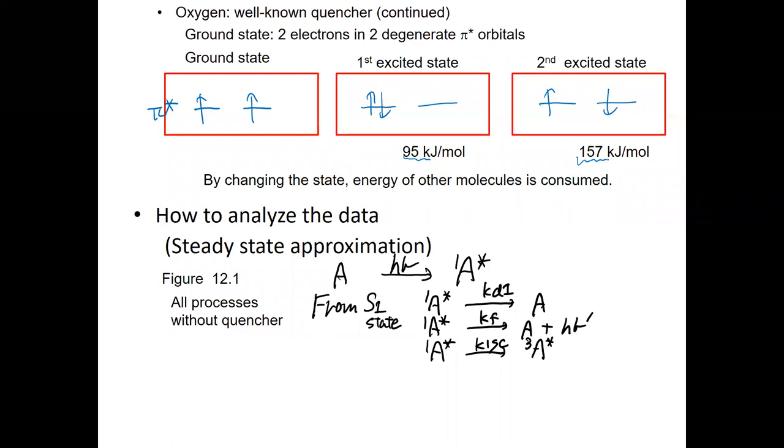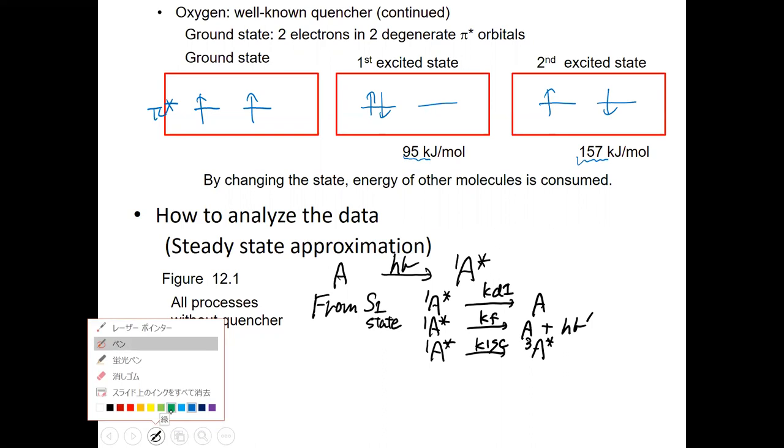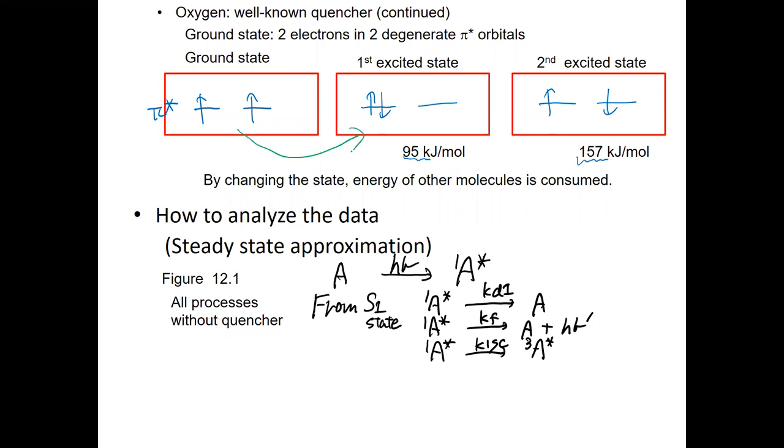And the energy difference is actually about 100 kJ or 150 kJ per mole. It is weaker than the chemical bond energy, but it's a very convenient energy to take energy out of the chemical reaction system. So that's why it can easily remove the reaction energy if you have oxygen inside. Because just by changing the electron configuration, this one absorbs the energy of 100, this one absorbs 150. So it can easily remove the energy from your system.